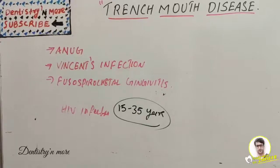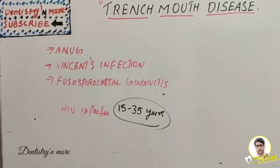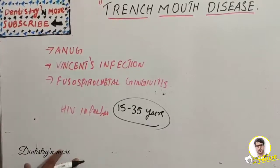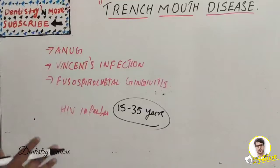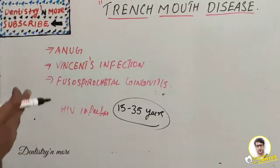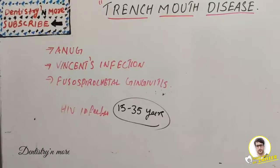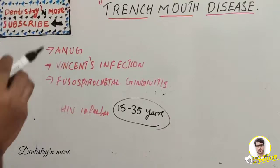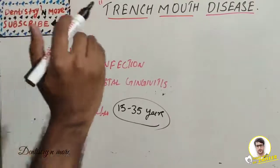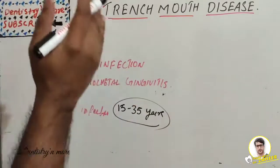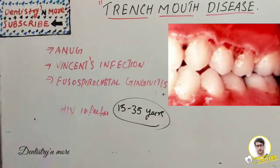Welcome back to another session. The topic for today is trench mouth disease. Trench mouth disease is nothing but acute necrotizing ulcerative gingivitis, which is a rare condition characterized clinically by necrosis of the free gingival margin, the crest of the gingiva, and the interdental papilla.